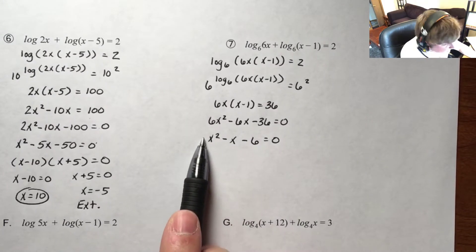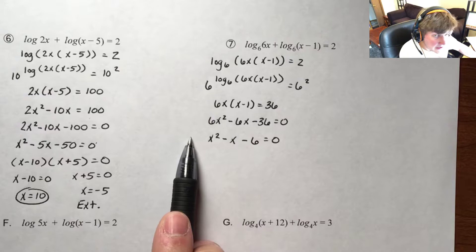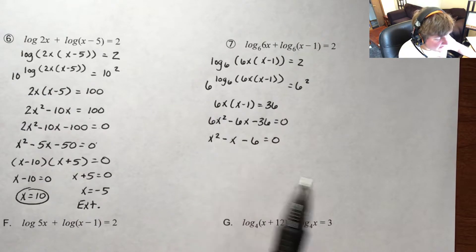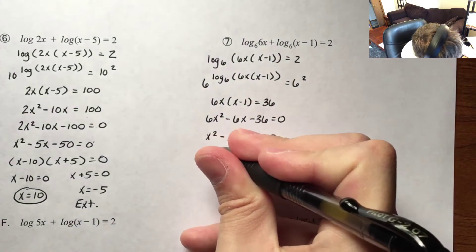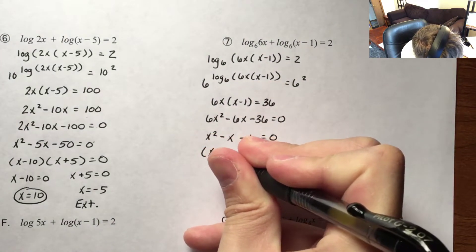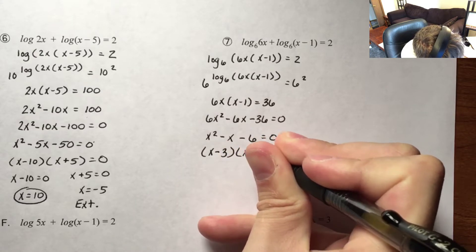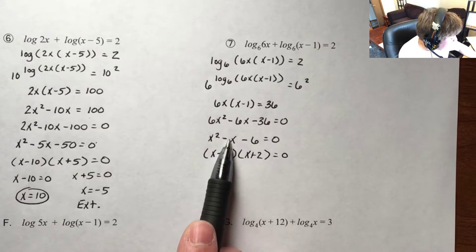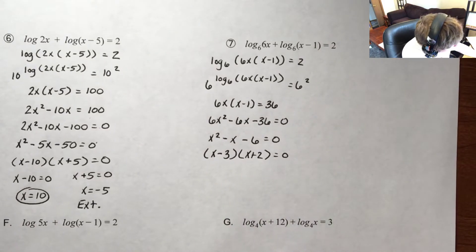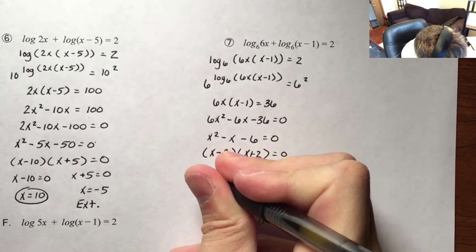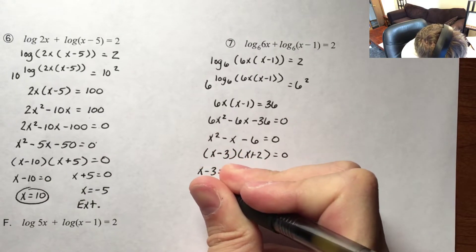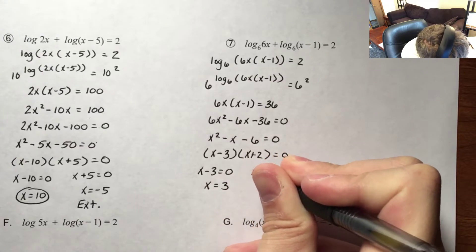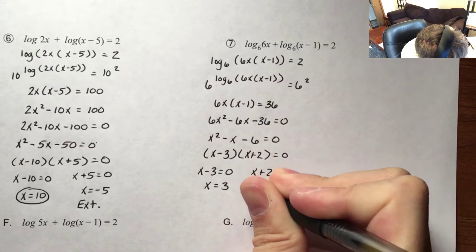I have a 3-term polynomial and my a value is 1 — if there's nothing there, it's implied to be 1. So I'm looking for numbers that multiply to negative 6 and add to negative 1, which gives me x minus 3 and x plus 2. So x minus 3 equals 0 means x is 3, and x plus 2 equals 0 means x is negative 2. We've got to figure out if we have any extraneous solutions here.